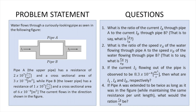The problem we're going to be solving today goes as follows. Water flows through a curiously looking pipe as seen in the picture. Pipe A, which is the upper pipe, has a resistance of 2×10⁷ resistance units and a cross-sectional area of 3×10⁻⁴ m². Pipe B, which is the lower branch, has a resistance of 1×10⁷ resistance units and a cross-sectional area of 6×10⁻⁴ m². The current flows left to right as shown in the figure.